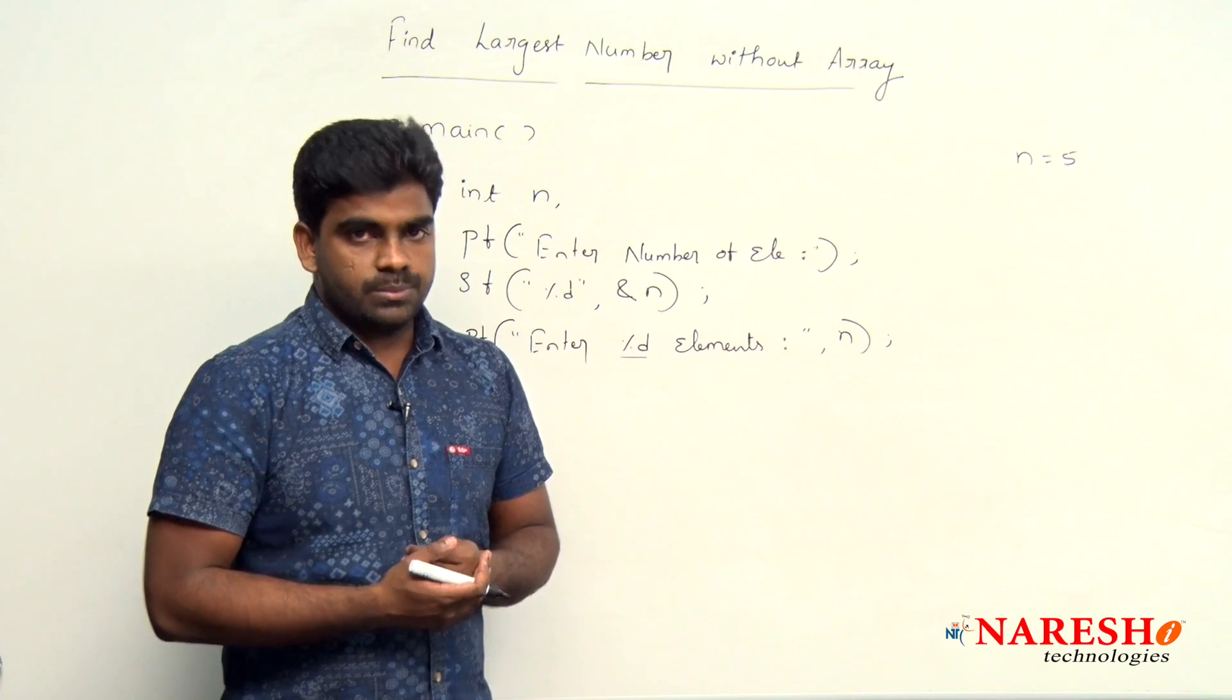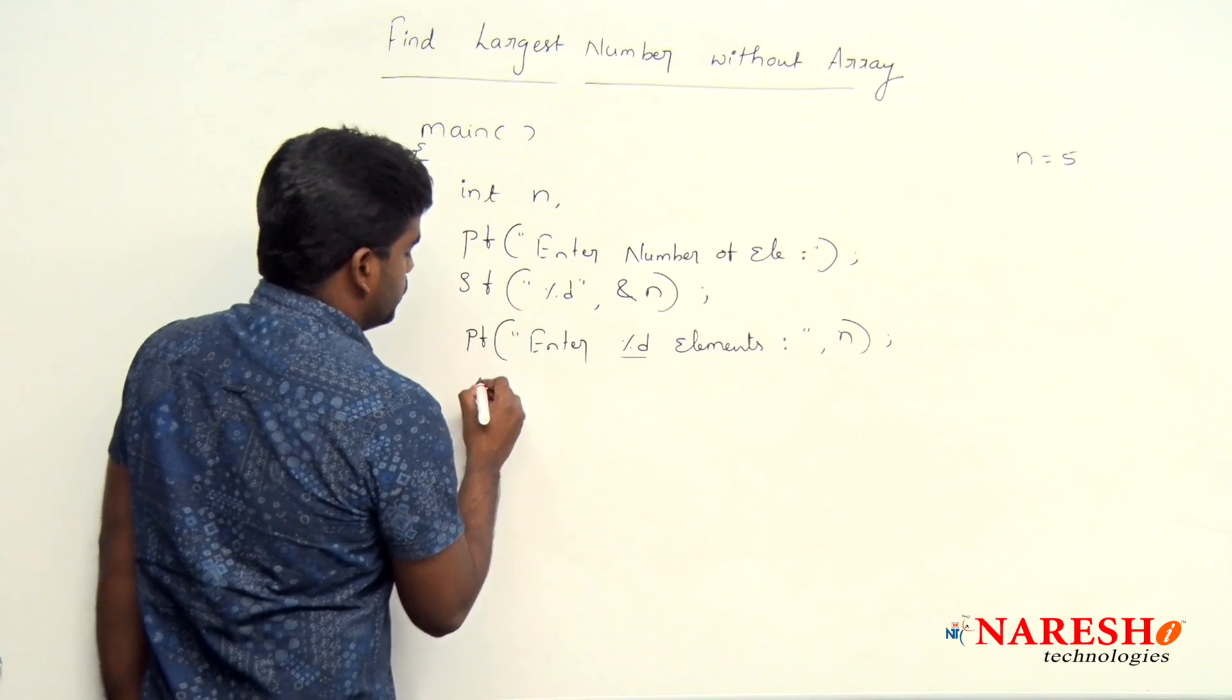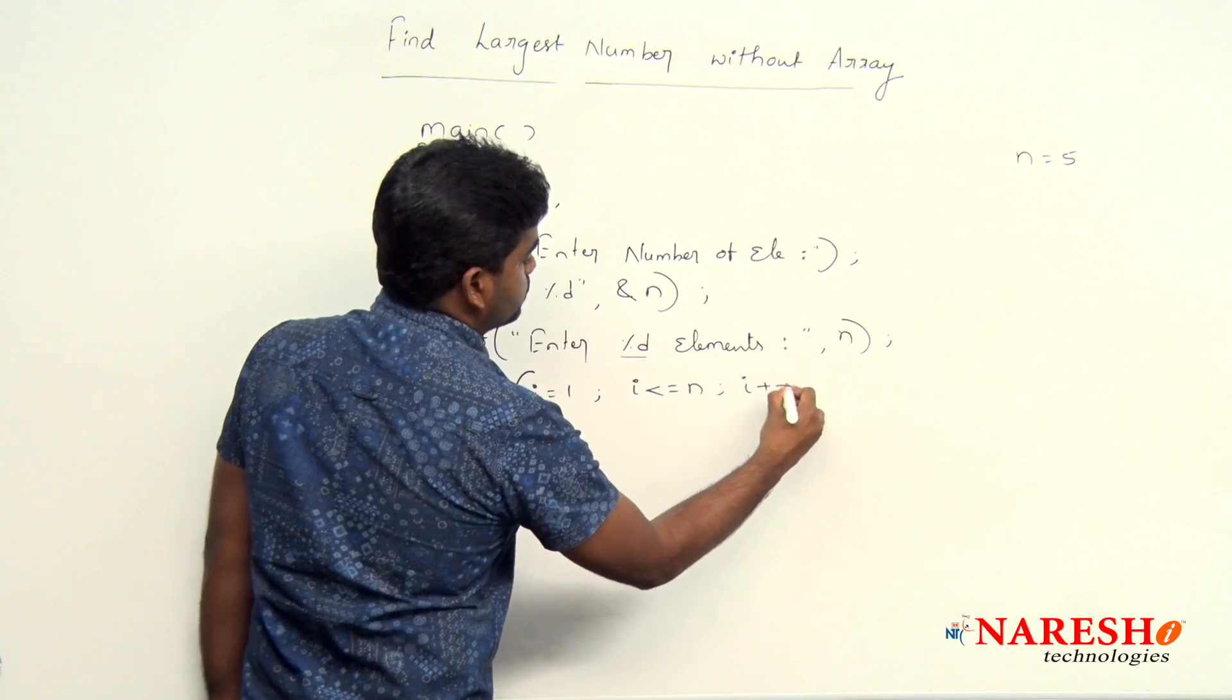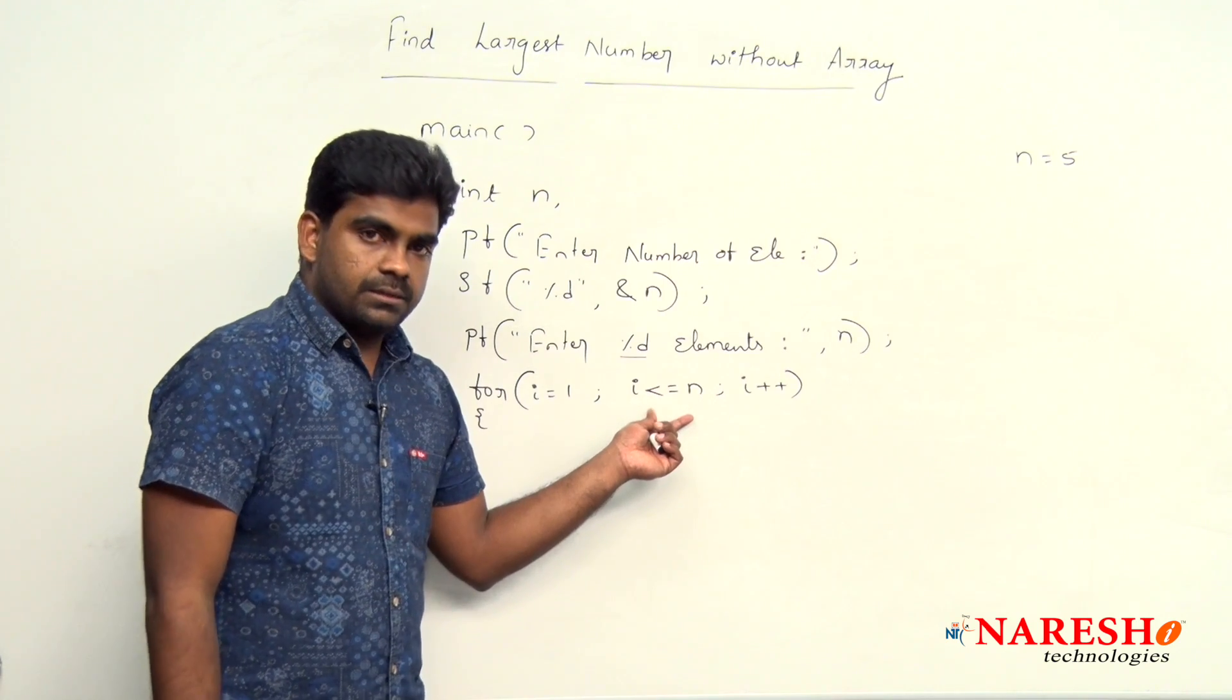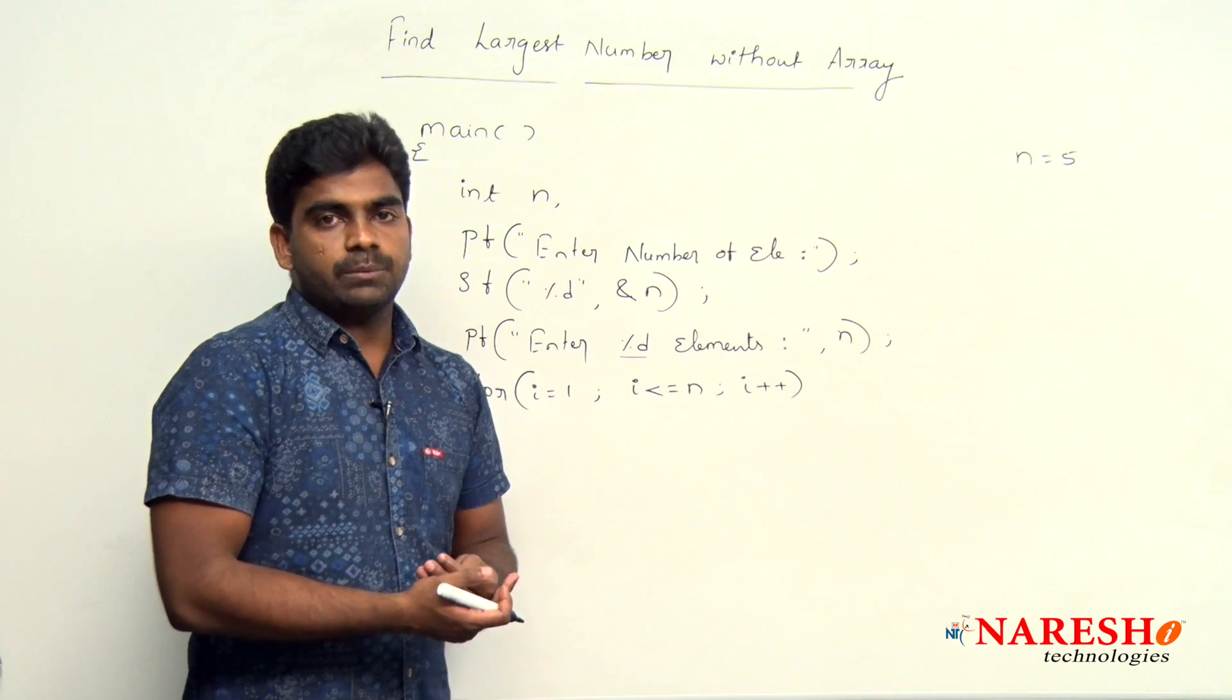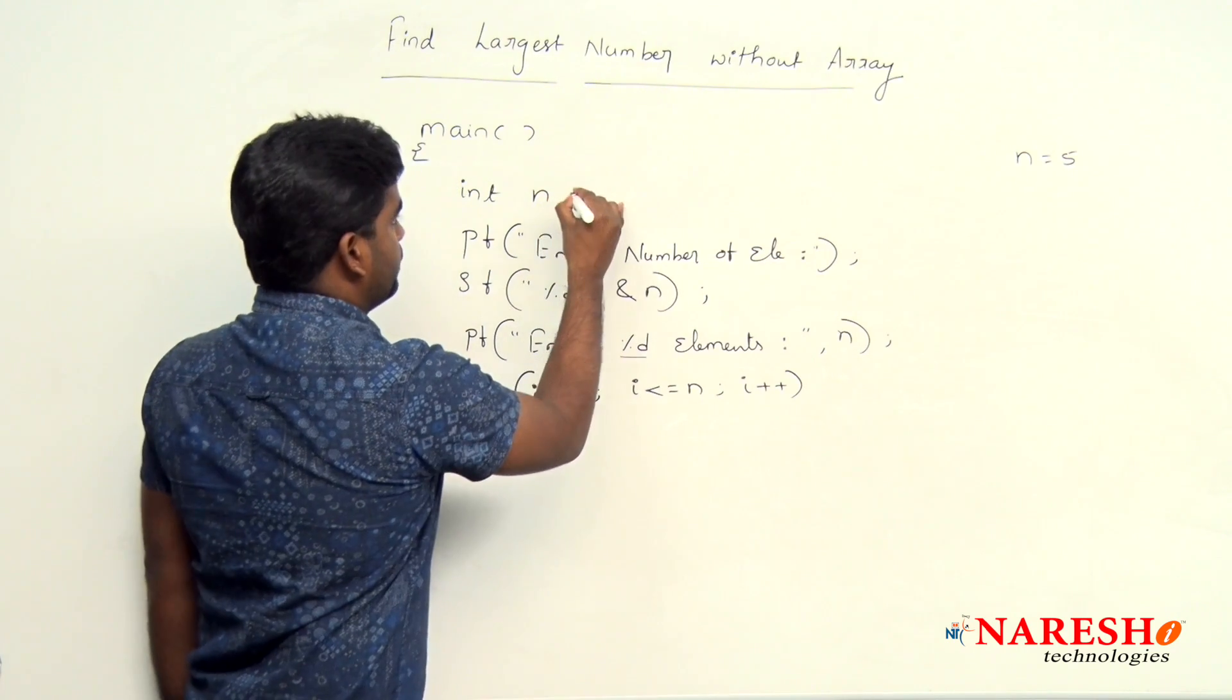As we are not using arrays concept here, while reading the elements only we have to check the biggest element. First to repeat the for loop, i value starts with 1, 5 times i is less than or equal to 5, i plus plus. Generally array index starts with 0, here we are not using the concept of arrays. So 5 times we have to repeat, 1 to 5 we are repeating as n value is 5. If n value is 10, just 1 to 10 we are repeating.